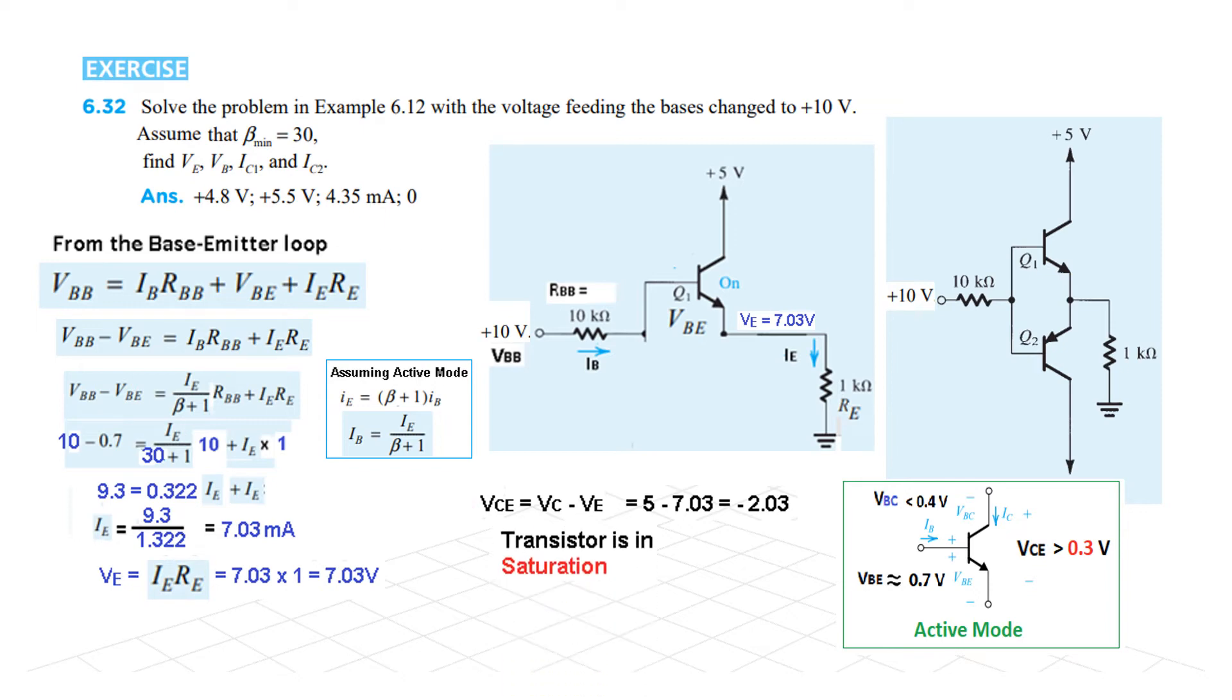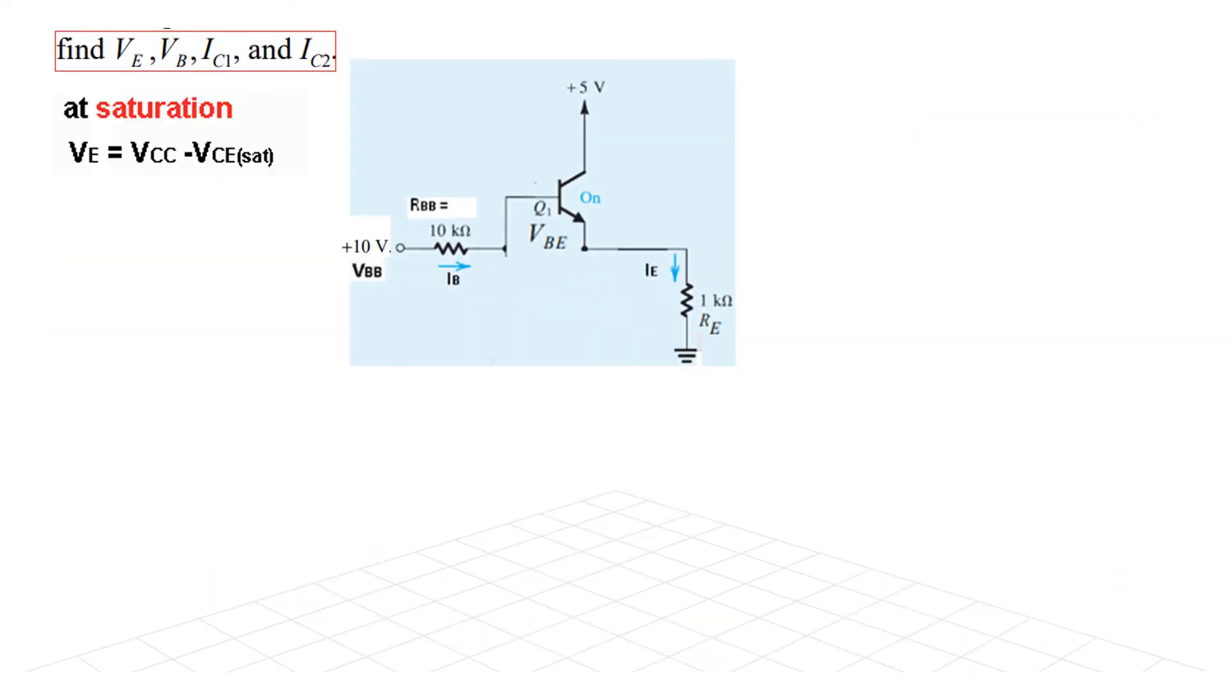The transistor is in saturation mode because of the negative voltage, this negative voltage. So since our assumption of active mode was incorrect, hence IE and VE calculations are incorrect that we did here.